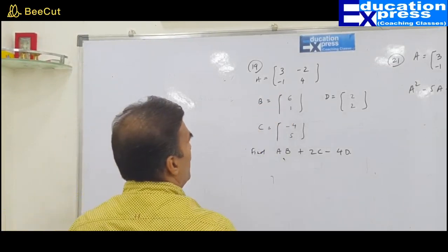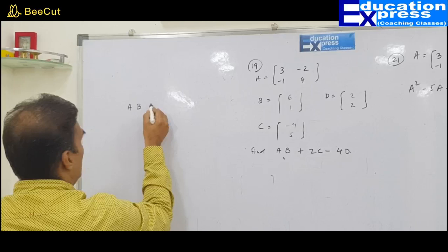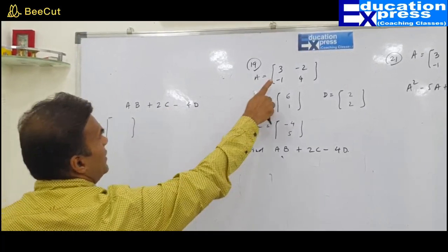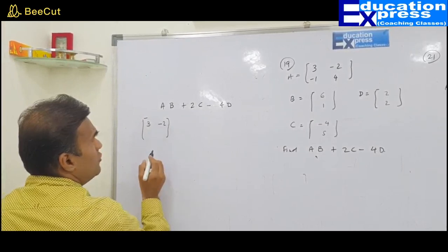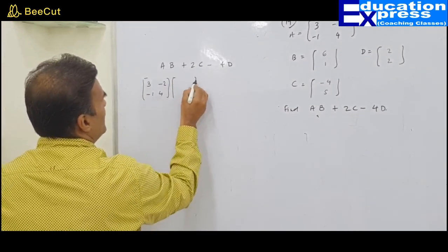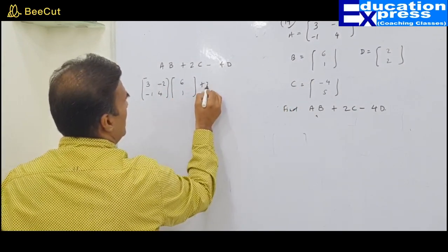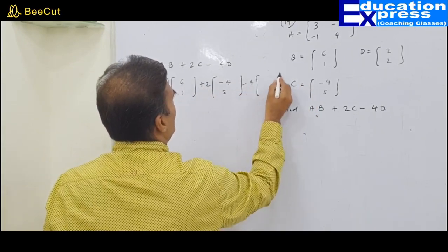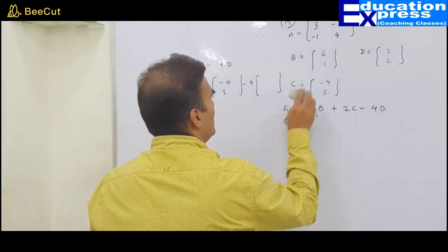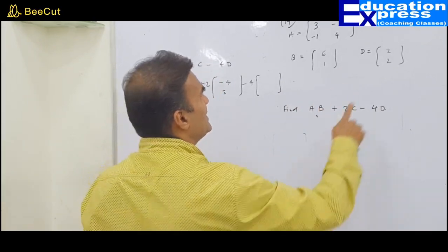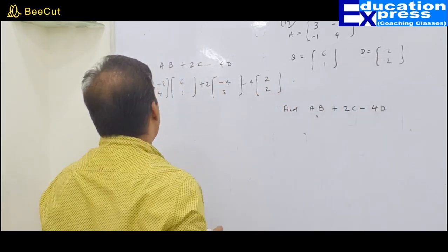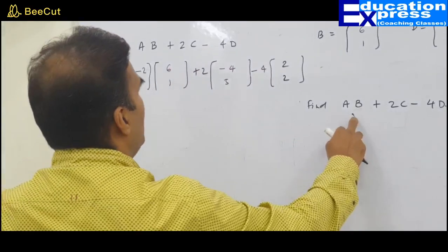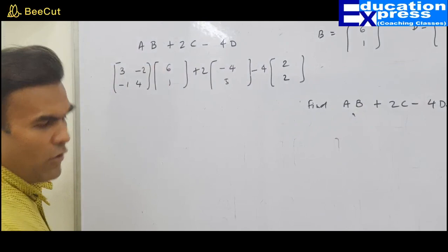AB plus 2C minus 4D — I have to find that. So let us put the value of matrix A: 3, minus 2, minus 1 and 4. Matrix B: 6. Plus 2 times matrix C, minus 4 times matrix D: 2 and 2. So we have AB plus 2C minus 4D. They are all properly arranged.